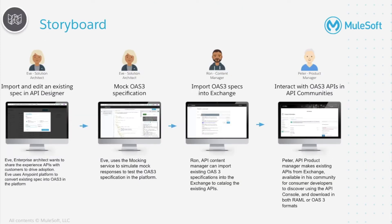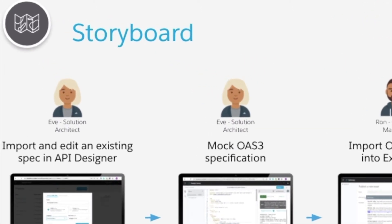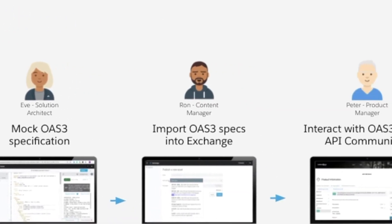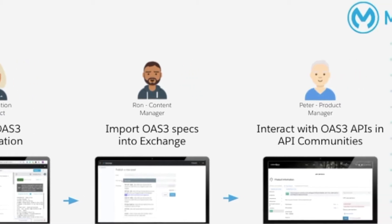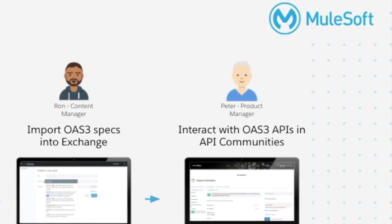Let me now introduce you to some of the common customer personas who will actively participate in different stages of the API development life cycle. We have Eve, the solution architect, who would like to import existing OAS 3 specs in API Designer or create one from the ground up. We have Ron, the content manager, interested in importing the spec into Anypoint Exchange, which is the interactive repository of API specifications and documentation for collaboration and discoverability. We have Peter, the product manager, who would like to publish the API specifications in OAS 3 format in API community portals such as those built with Exchange or in Anypoint Community Manager.